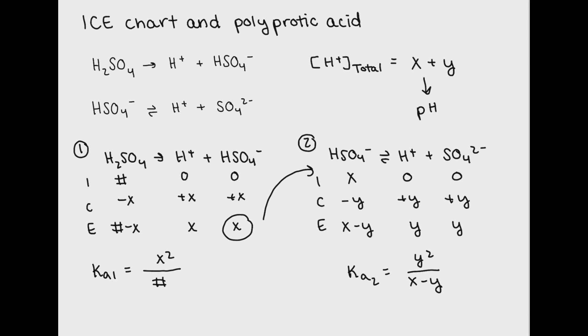A problem like this will likely ask you to find the pH of the polyprotic acid. To do this, you can add your concentration of H plus from both ICE tables together and use pH equals negative log to solve for the pH.